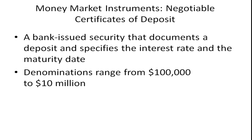Negotiable certificates of deposit are bank-issued securities that document a deposit and specify the interest rate and the maturity date. You shouldn't confuse them with the CDs you see at your local bank — those are usually for small depositors depositing $500 who want to save for five or six months or five years. Denominations for negotiable CDs range from a hundred thousand to ten million dollars.